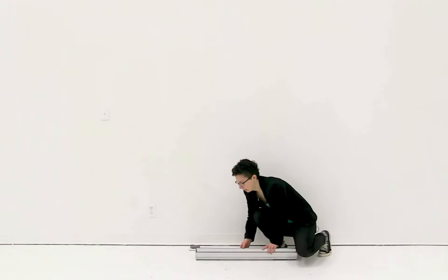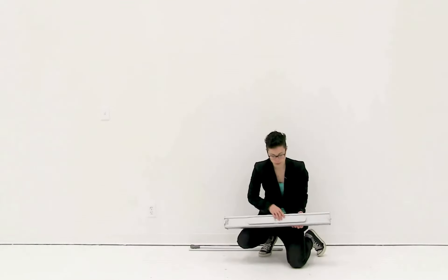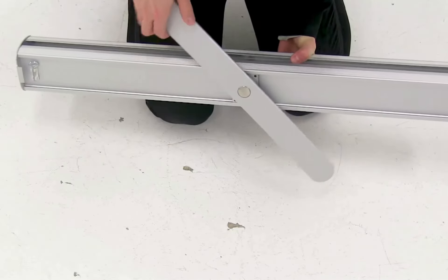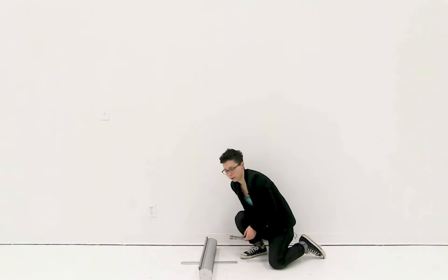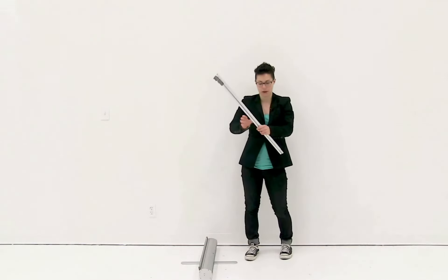First, I'm going to flip over my base and turn the foot perpendicular to my base. Next thing I'm going to do is connect together my shock corded pole.